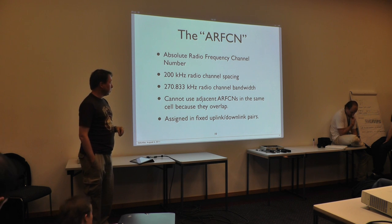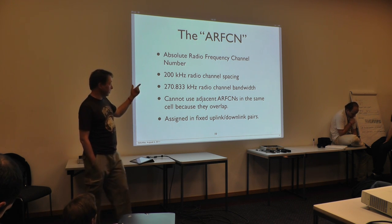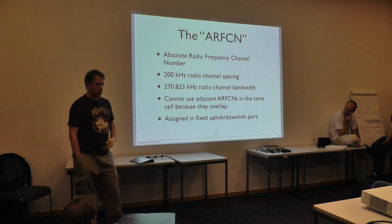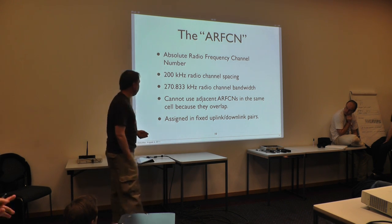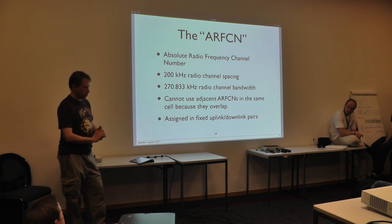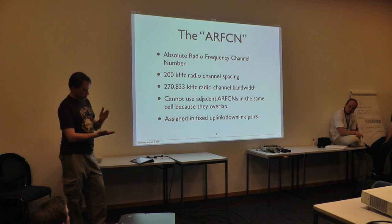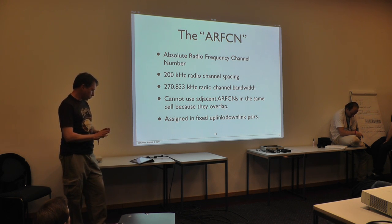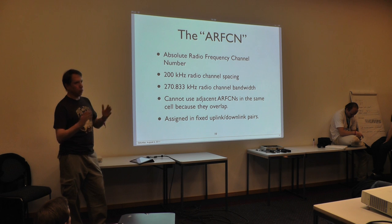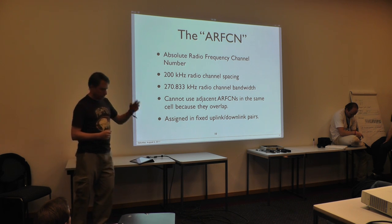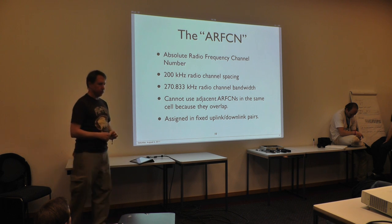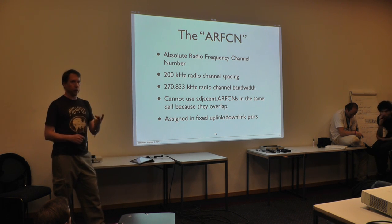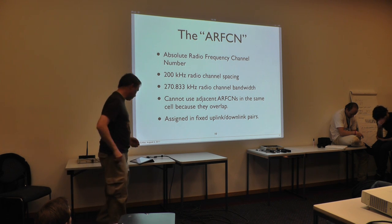A term you'll encounter a lot is ARFCN — the Absolute Radio Frequency Channel Number. In GSM, radio channels are spaced 200 kHz apart. They're actually wider than 200 kHz, meaning GSM channels overlap and can't be used in the same cell. These frequencies are assigned in a fixed sequence and numbered. Specifying ARFCN 867 in the DCS-1800 band refers to an actual pair of frequencies — one for uplink, one for downlink.